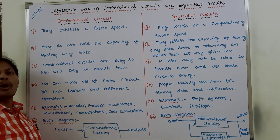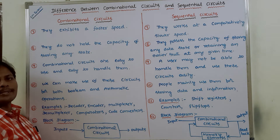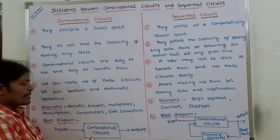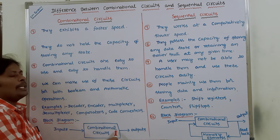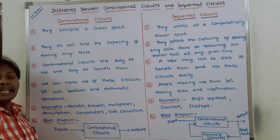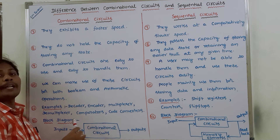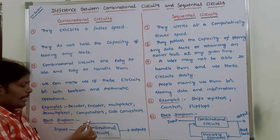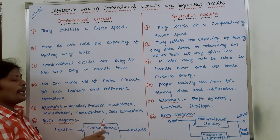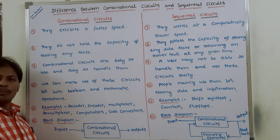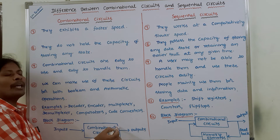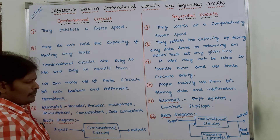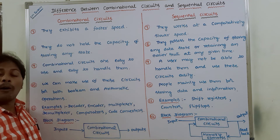The block diagram of a combinational circuit mainly consists of three parts: input, output, and the combinational circuit block itself. In the combinational circuit block we use logic gates such as AND, OR, and NOT gates to perform arithmetic and boolean operations. Because of that, the output depends only on the present inputs.